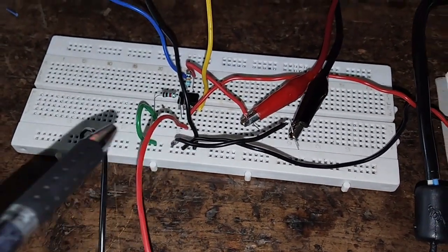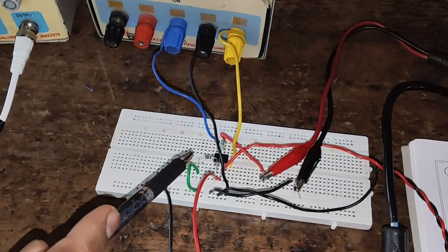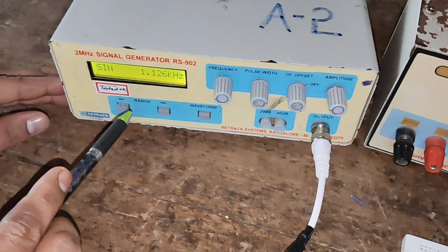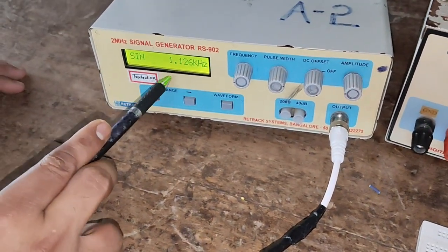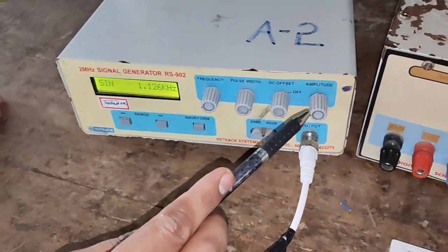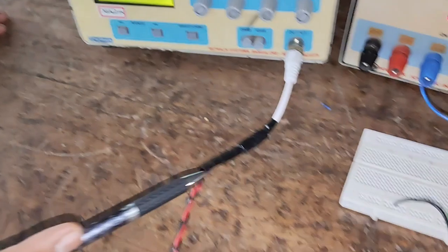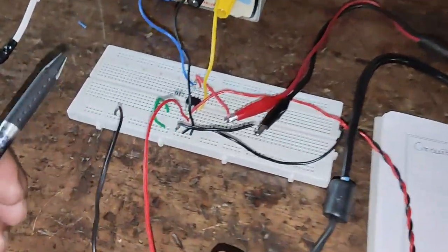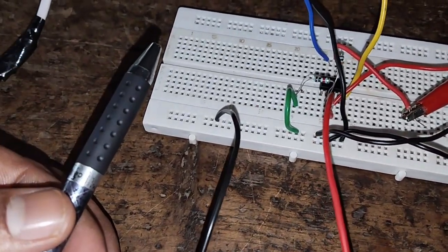Now we will apply the input signal to pin number 3 through resistor R1. This is the function generator. We have set the signal as sine wave with frequency of 1.1 kilo hertz and amplitude of 1 volt. I will connect this through BNC connector - positive to pin number 3 and negative to ground.